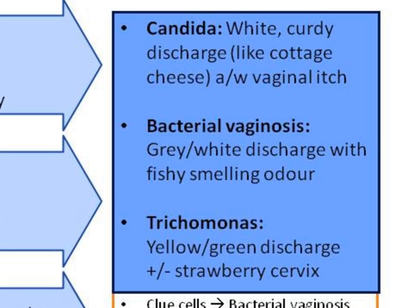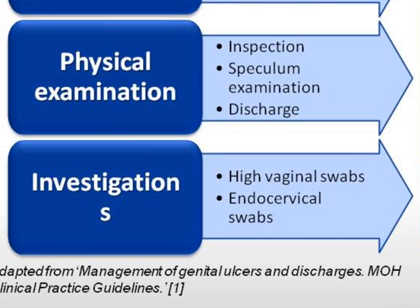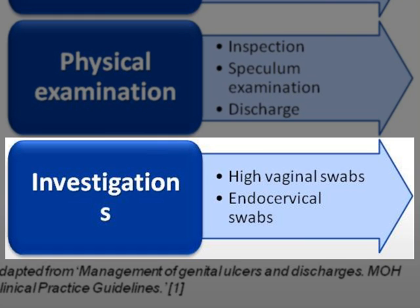The description in the top right blue box gives a clue as to the potential infection. Investigations are indicated if a woman is at high risk of STIs, has symptoms suggestive of upper genital tract infection — for example, abdominal pain, dyspareunia, or fever — has previous treatment which has failed, is postnatal, post-miscarriage, or post-abortion, or is within three weeks of insertion of an intrauterine contraceptive device.